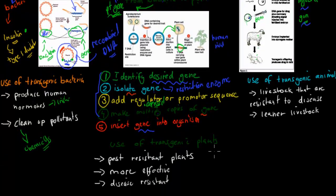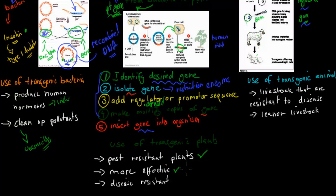For transgenic plants, we can make them pest resistant — fewer pest problems. We can make them more effective, maybe producing more fruit. And we can make them disease resistant. Pests are usually insects and diseases are diseases, but we can make plants both pest and disease resistant.